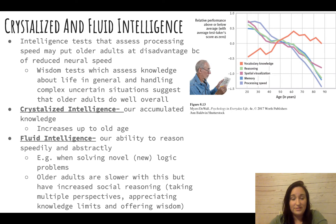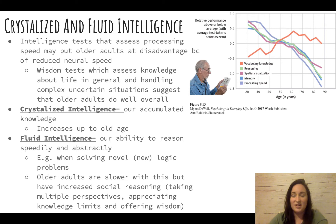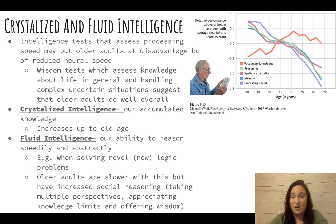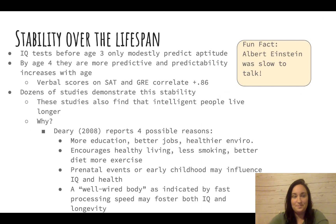It's also important to note that older adults have what's called wisdom. Researchers actually conduct wisdom tests, measuring social reasoning. Older adults are better at handling complex, awkward social situations, more aware of the limitations of their own knowledge, and more able to take on multiple perspectives.